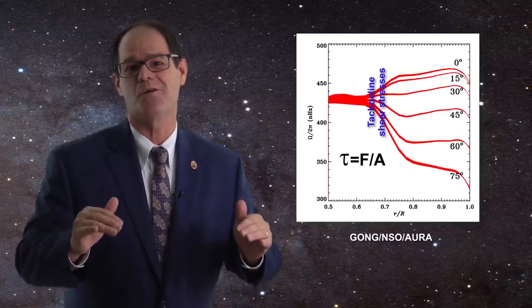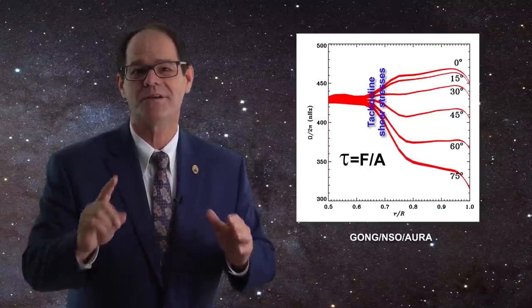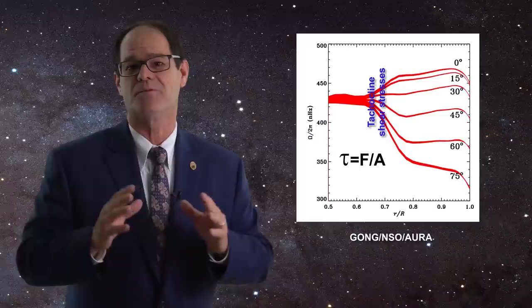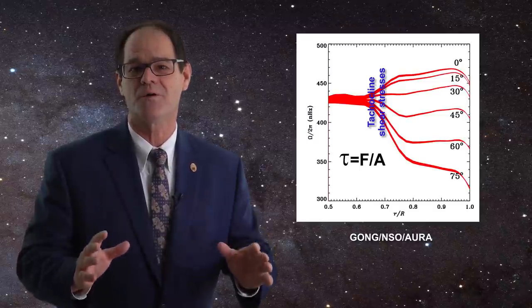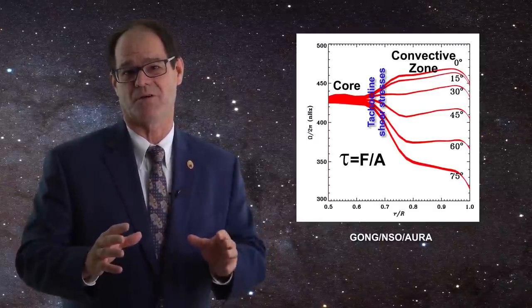There is another aspect to note in the data from GONG. Namely, there is no evidence in this data for a radiative zone in the Sun. We observe only the solid body rotation of the core, the tachocline, and the convective zone.